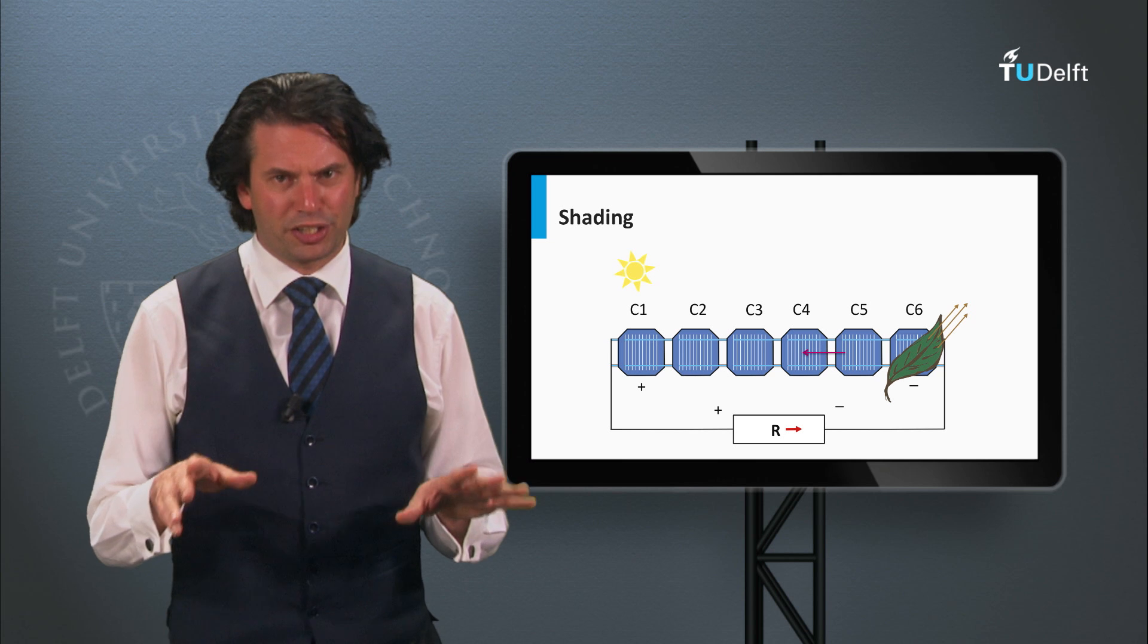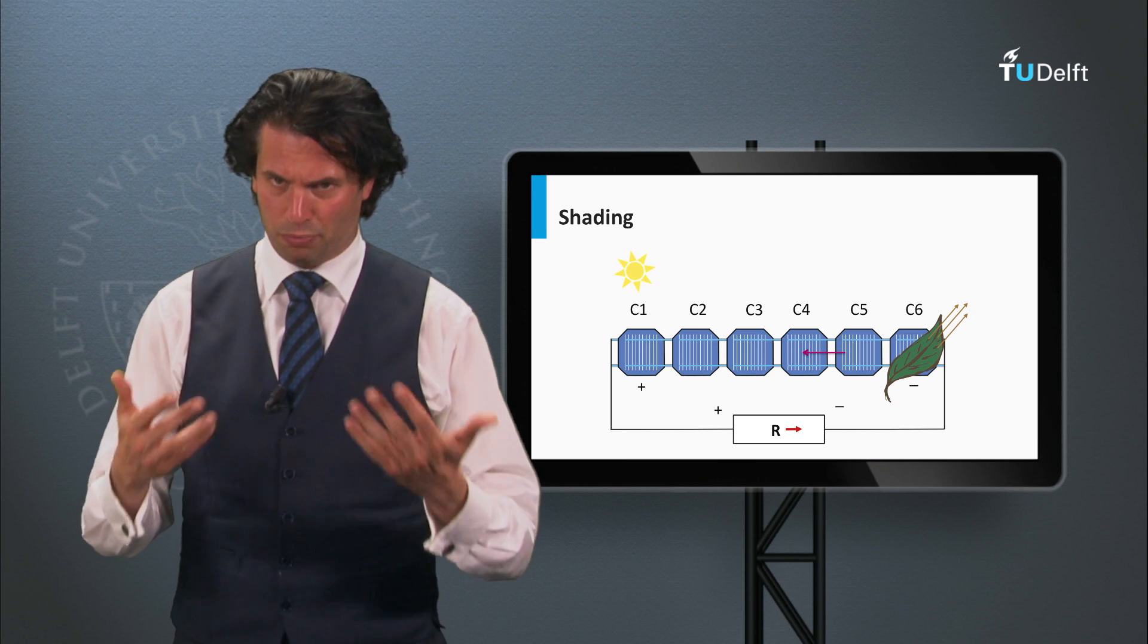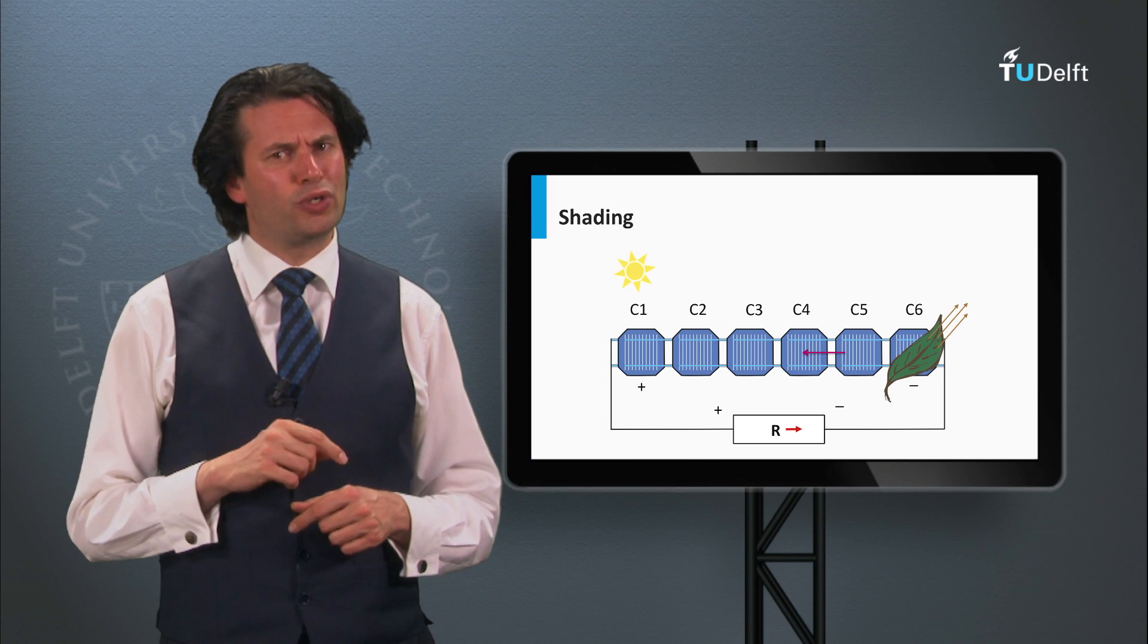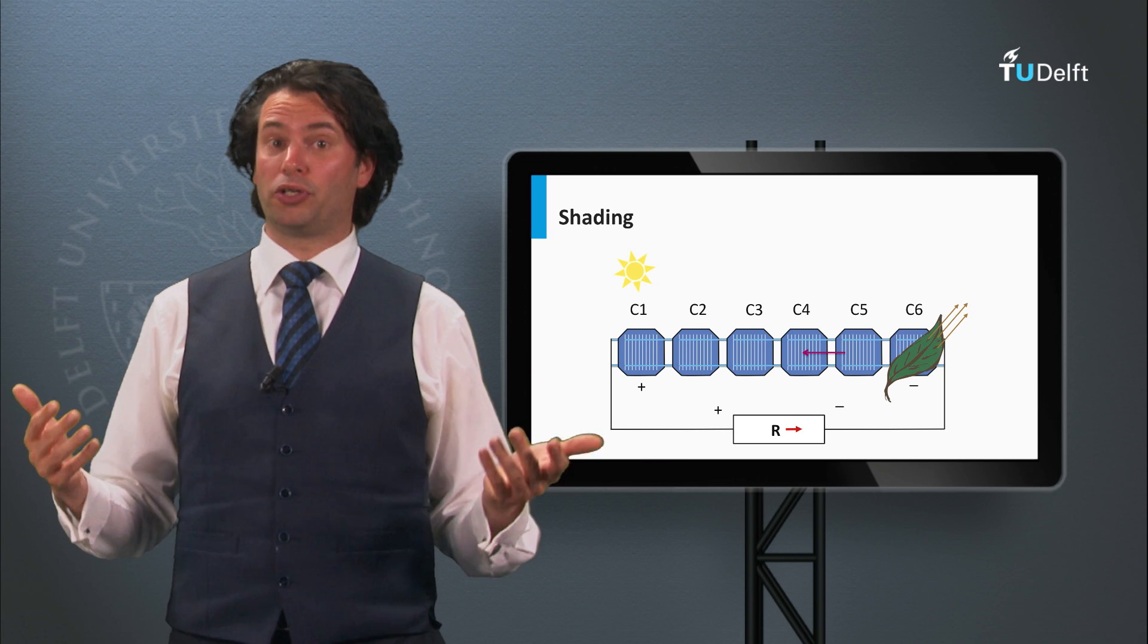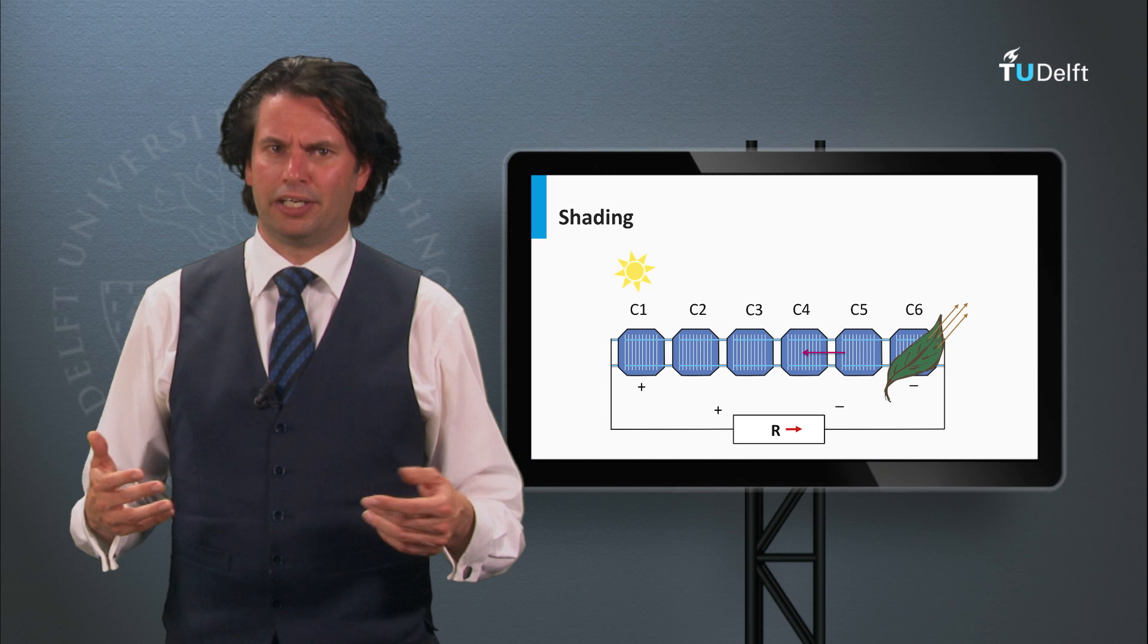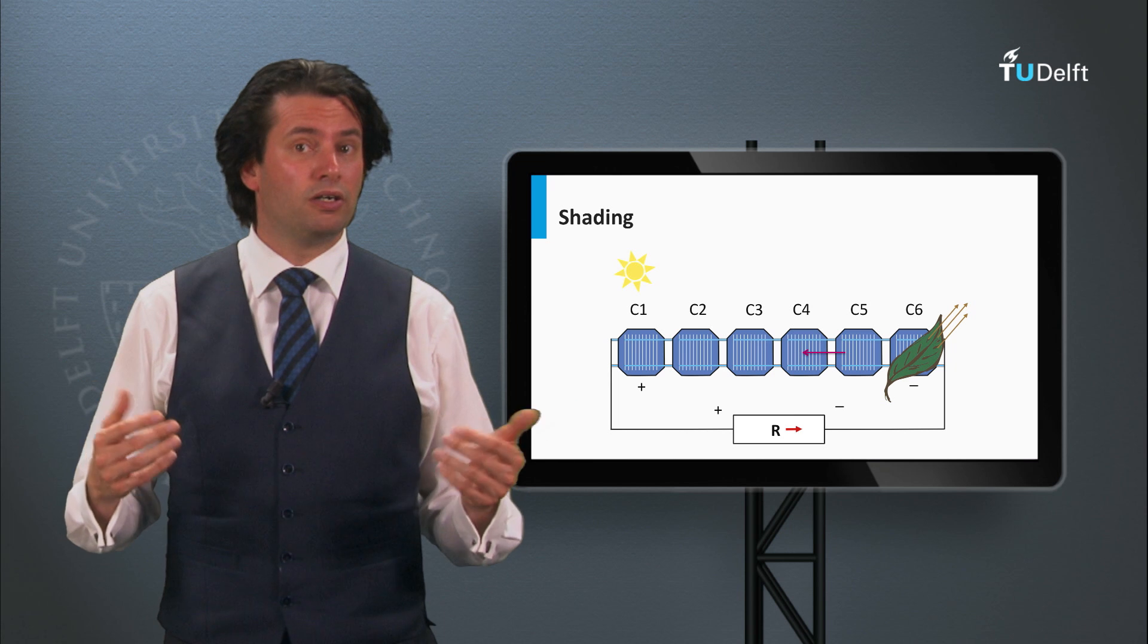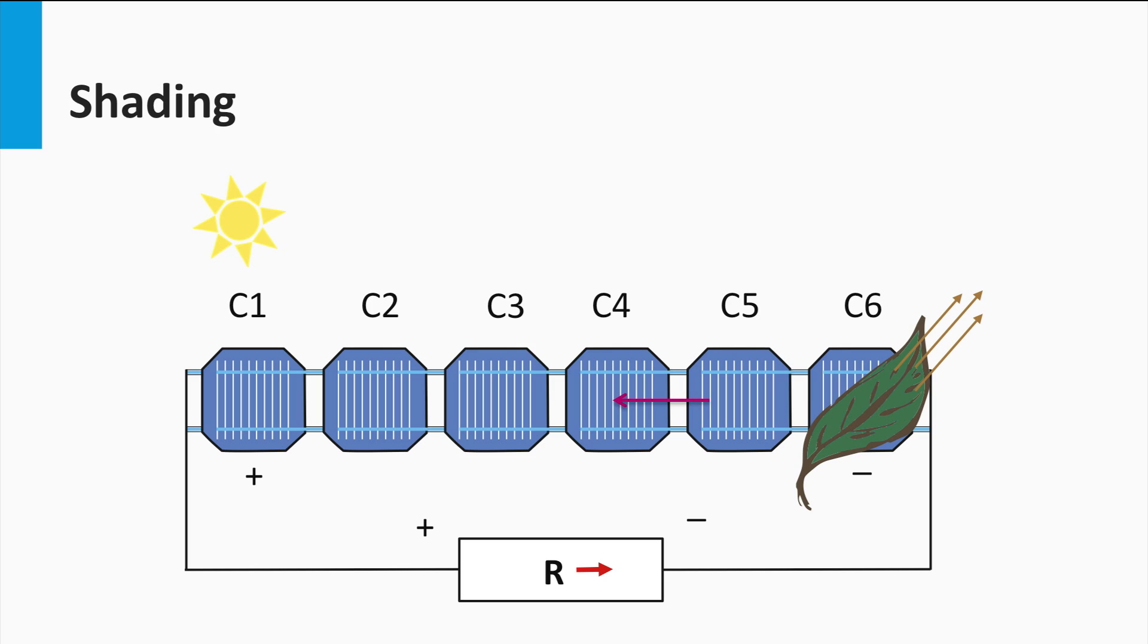Another aspect of modules is that some bypass diodes are integrated into the modules. Why do we need bypass diodes? For that we have to look at a solar module in real life. In real life, the solar module can be partly shaded. This can be the shade of an object nearby, like a tree, a chimney or a neighboring building. The shading can be caused by a simple leaf that has fallen from the tree.